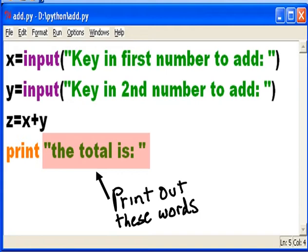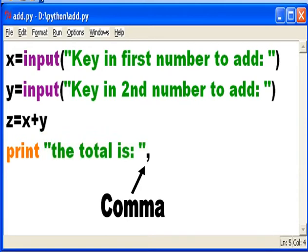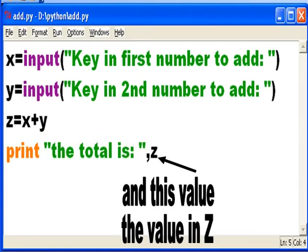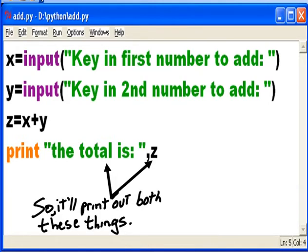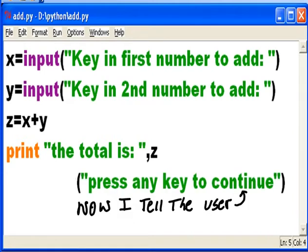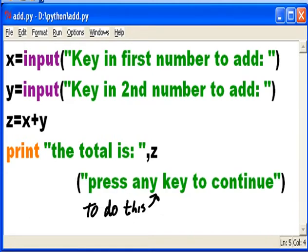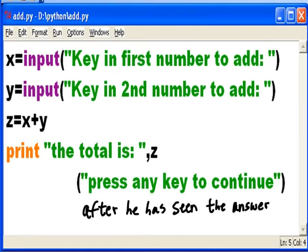Print out these words: the total is, comma, and this value, the value in Z. So it'll print out both these things.